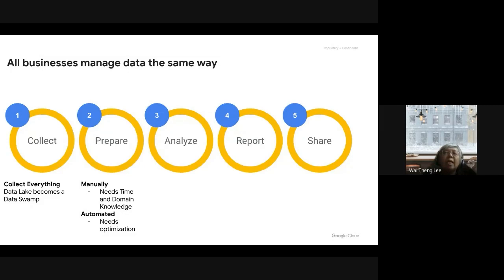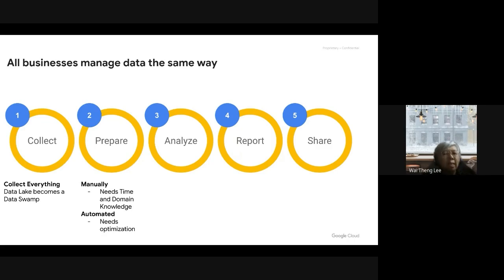With automation, you need to change it over time to optimize the preparation. Today you think the data looks a certain way, then suddenly you encounter a new field or unexpected value. You need to update your automation to say: how do I map this data to the format I want?